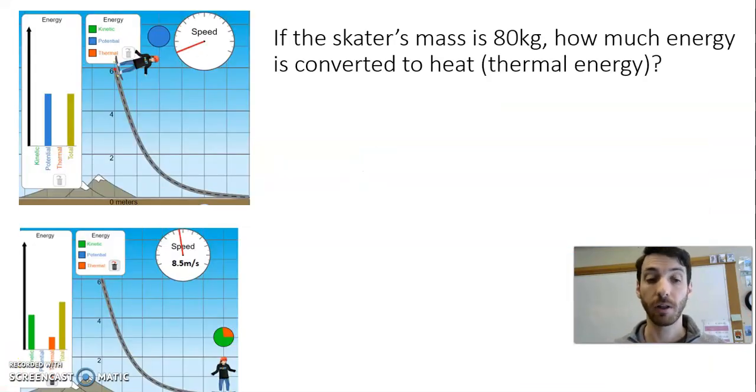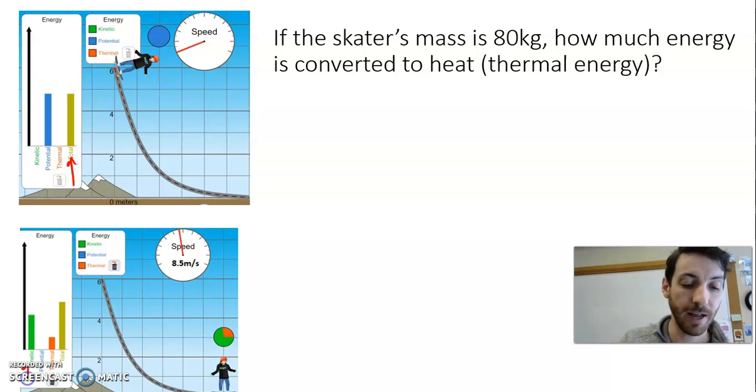The problem that we're going to look at today is: if the skater's mass is 80 kilograms, how much energy is converted to heat, thermal energy, with this scenario? Here we have some information. Looking at these pictures, the skater starts with just gravitational potential energy—that's its total energy—and that's being converted to kinetic energy and in this case thermal energy as well.